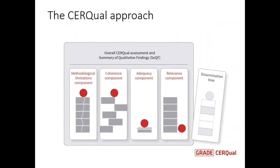A CERQual assessment is based on four components, which you'll see on the screen now. First is methodological limitations. The second, coherence. The third, adequacy. And the fourth, relevance. You'll also see a third block labeled dissemination bias. This is an area we recognize to be important in the context of qualitative research, but for which we don't yet have an approach to assessing within CERQual. So we're flagging it there — it's something that may become part of the CERQual approach later, and there's a program of research looking at that at the moment.